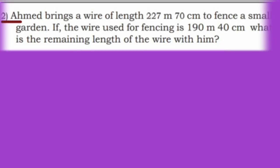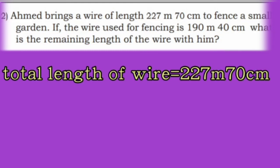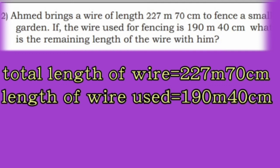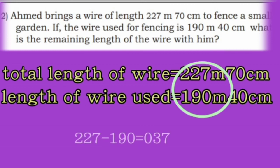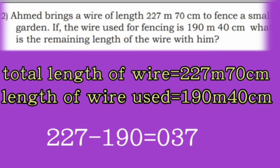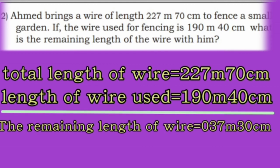Now second problem: Ahmad brings a wire of length 227 meter 70 cm to fence a small garden. If the wire used for fencing is 190 meter 40 cm, what is the remaining length of wire with him? Total length of wire: 227 meter 70 cm. Length of wire used: 190 meter 40 cm. First subtract centimeters: 70 cm minus 40 cm is 30 cm. Next subtract meters: 227 minus 190 is 37 meter. The remaining length of wire is 37 meter 30 cm.